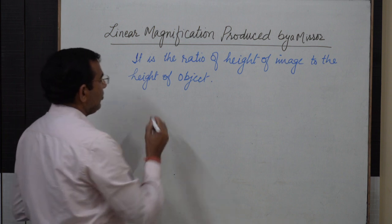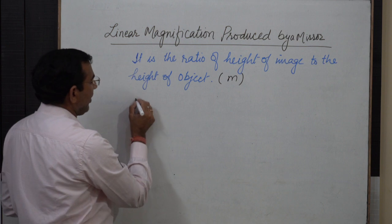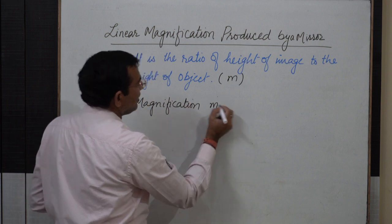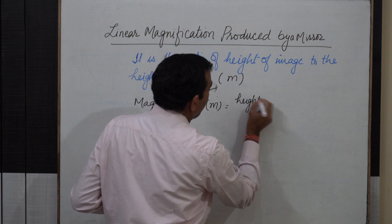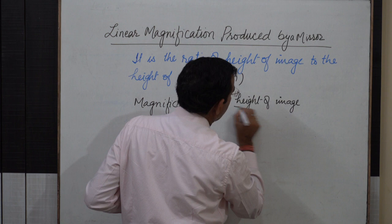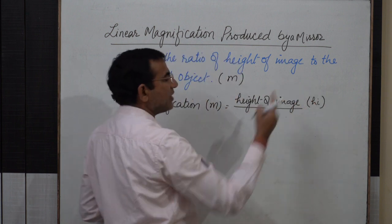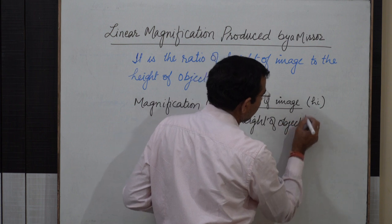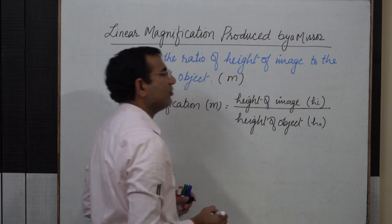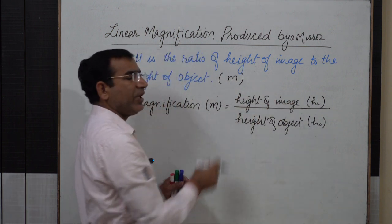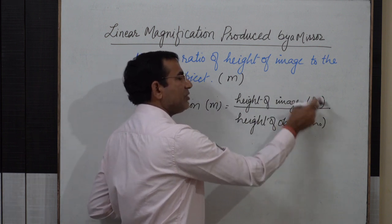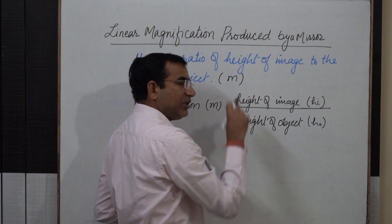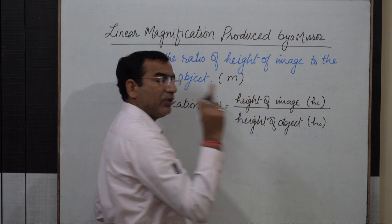Magnification is denoted by m (small letter m). So magnification m equals height of image (hi, where i stands for image) divided by height of object (ho, where o stands for object). If image is enlarged, value of m will be greater than 1. If image and object are of the same size, magnification will be 1. If the size of the image is smaller — diminished — then value of magnification will be less than 1.